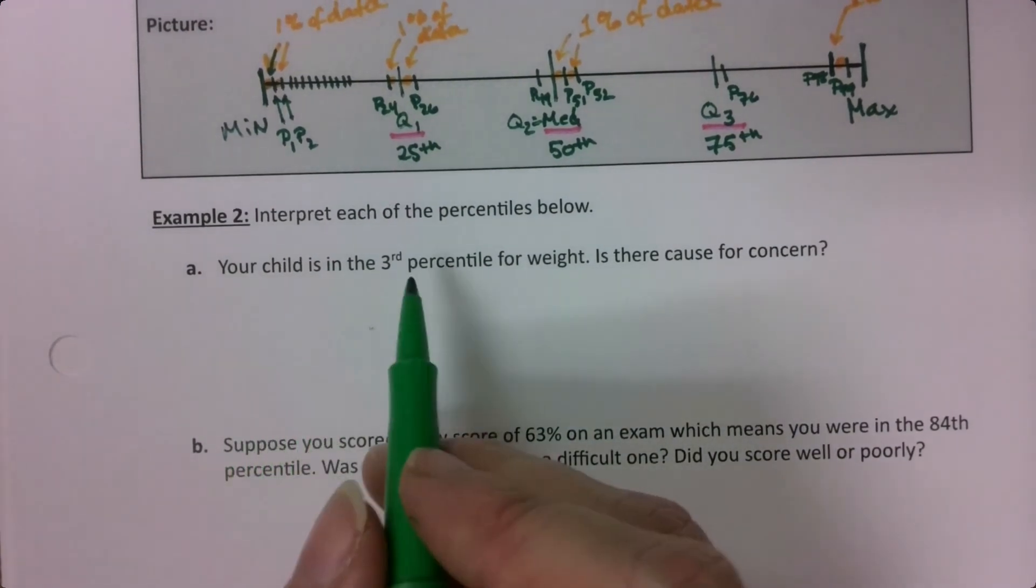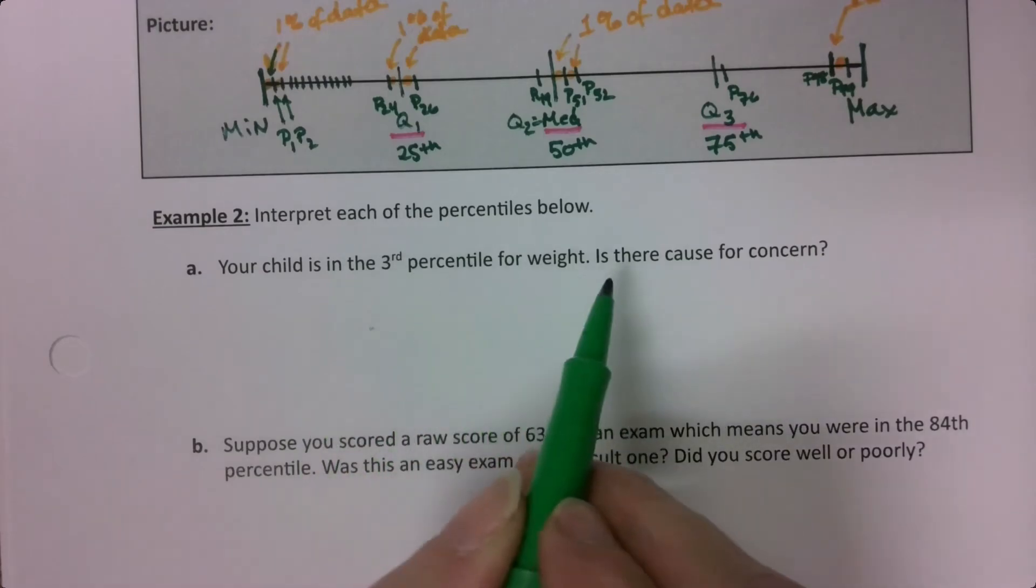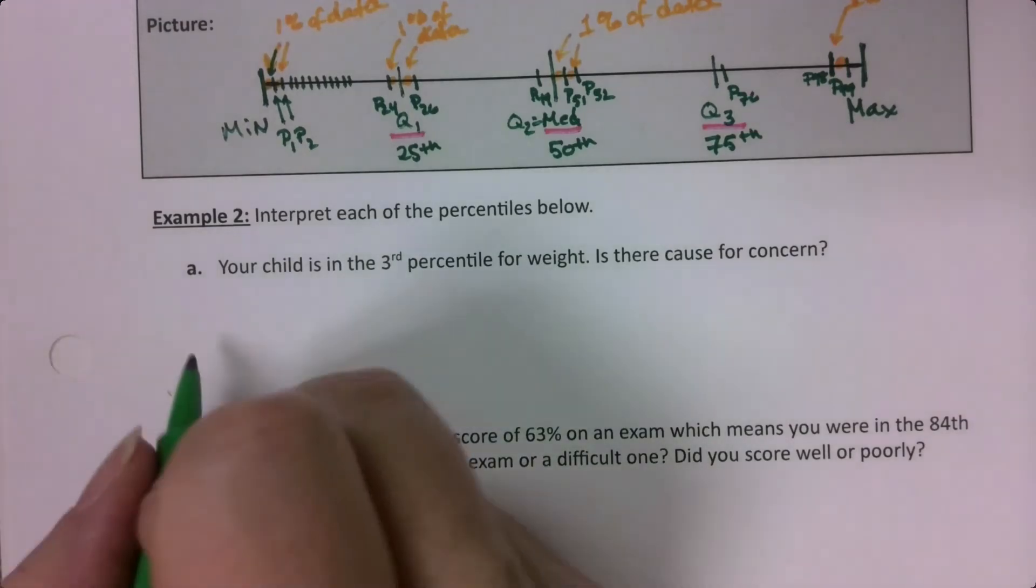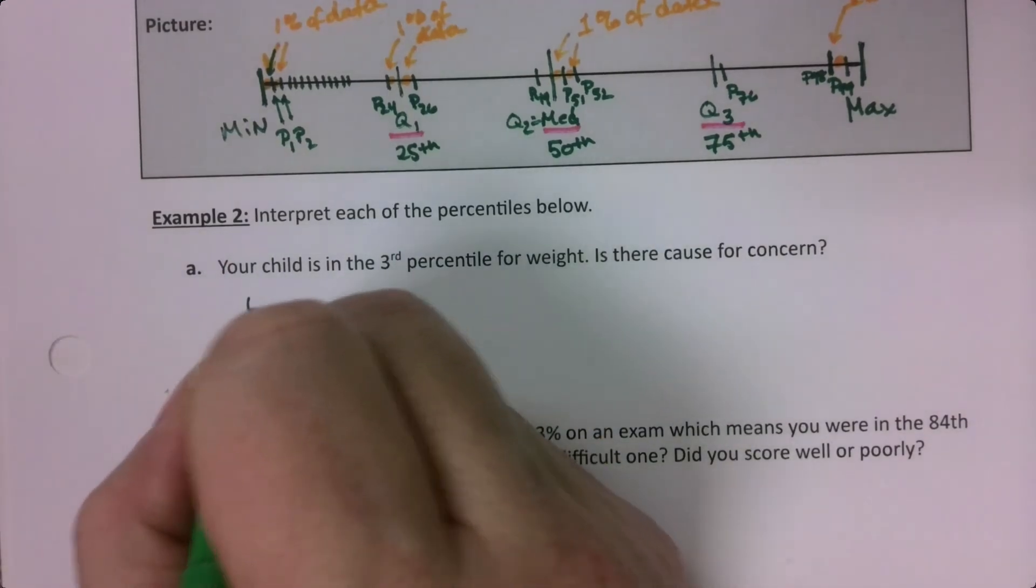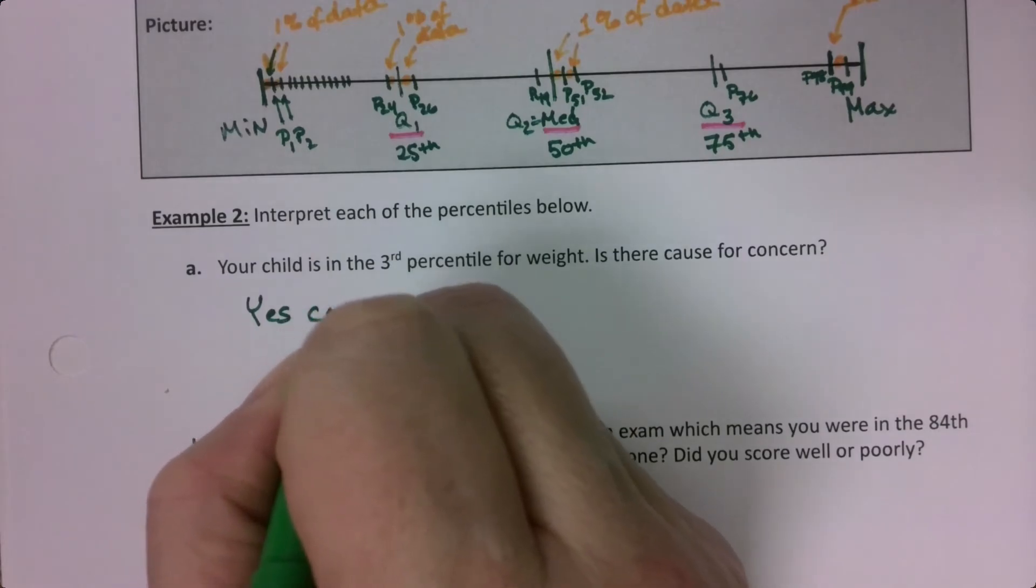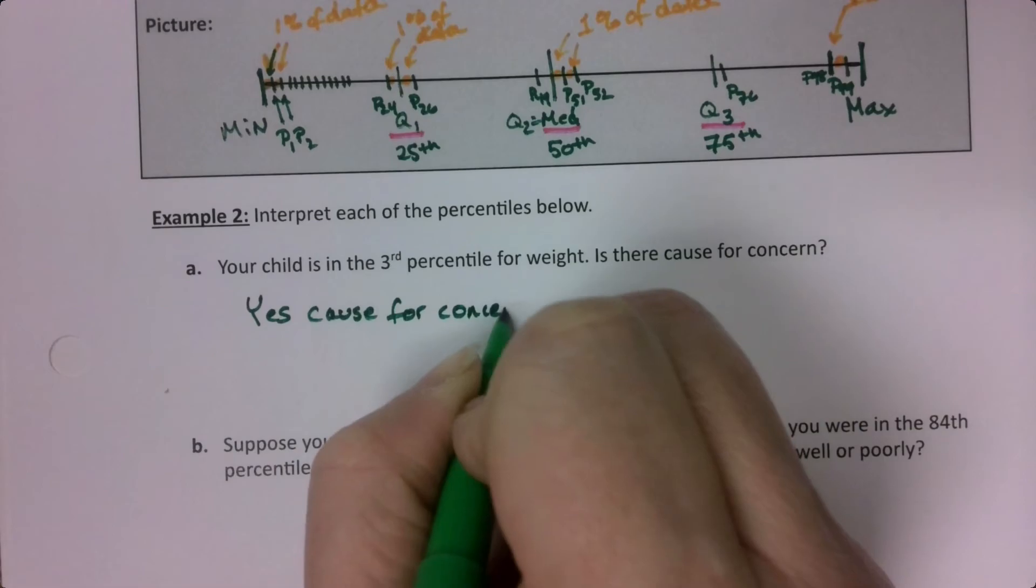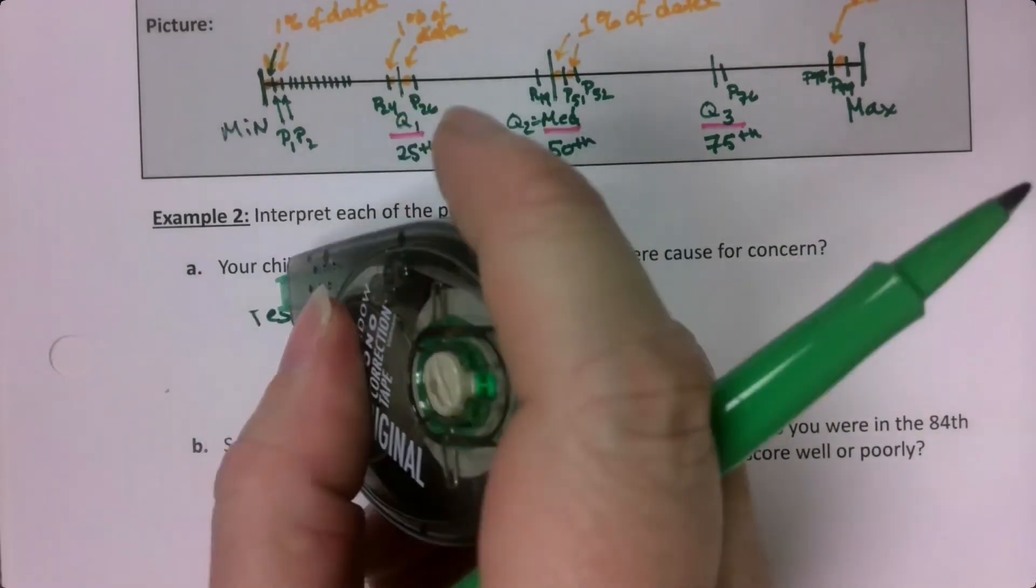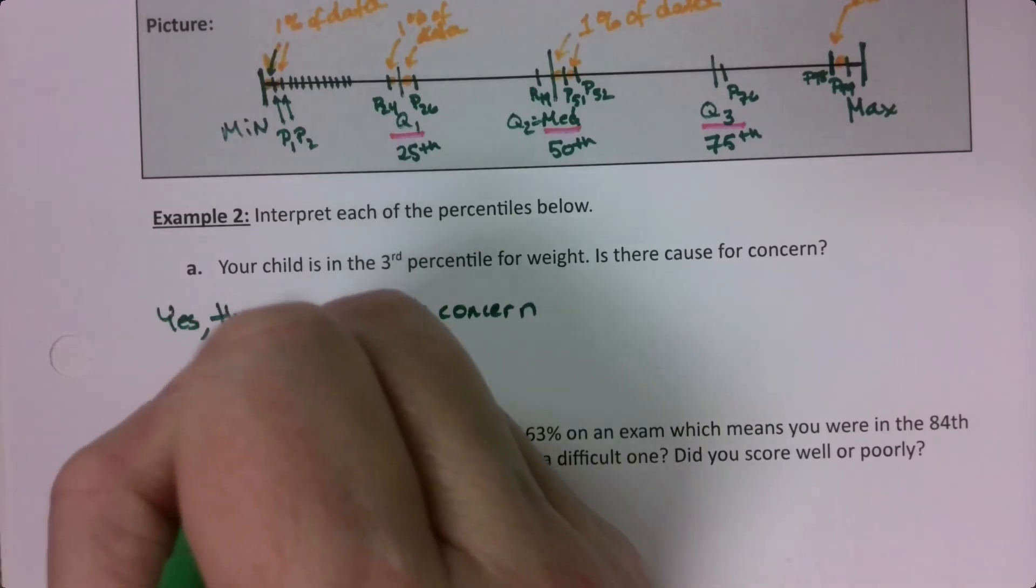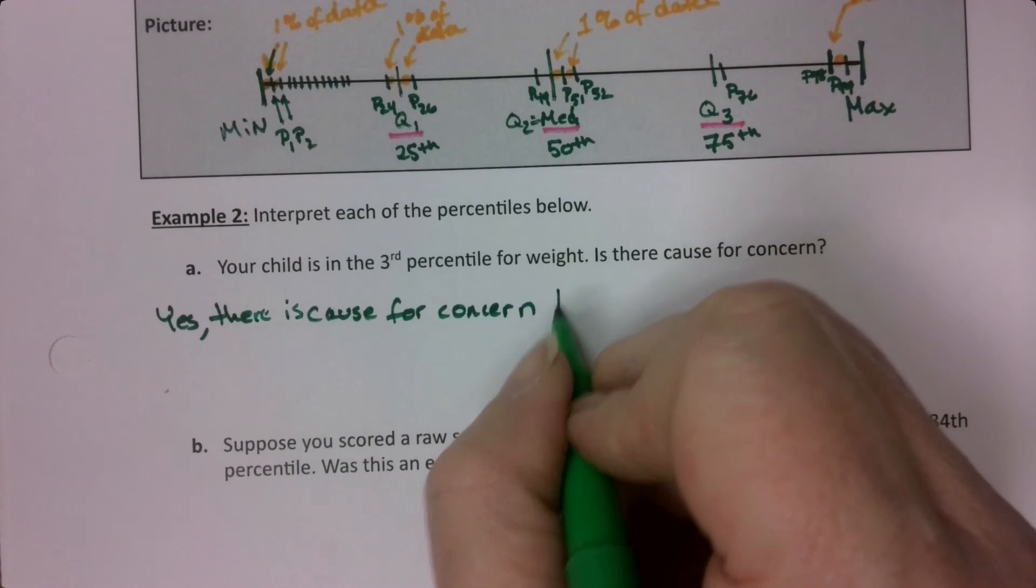Child's height. Your child is in the third percentile for weight. Is there cause for concern? Oh yes. Let's interpret this. Yes, there is cause for concern because the child is underweight.